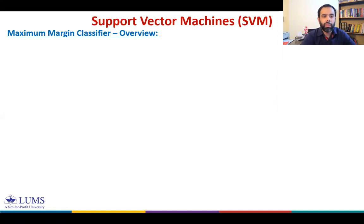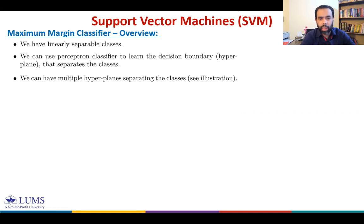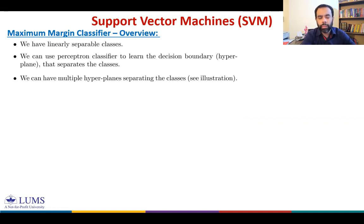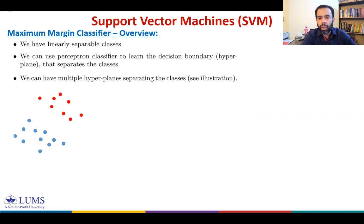Let's start with an overview of the maximum margin classifier. We assume we have linearly separable classes, and for linearly separable classes we know we can use the perceptron classifier to learn the decision boundary — that is, the hyperplane that separates the classes. When we find such a hyperplane, we can in fact have multiple hyperplanes separating the classes. For example, consider these points from two classes in a binary classification problem.